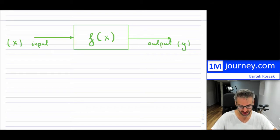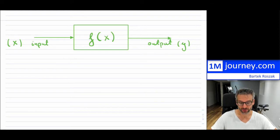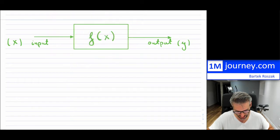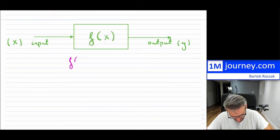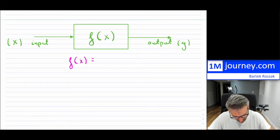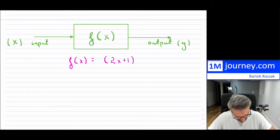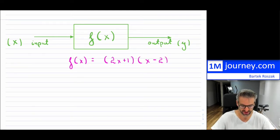Our function f(x) is going to be a quadratic. If I look at a quadratic in factored form, that means we have some zeros we can obtain — some factors. So let's say I have (2x + 1) and (x − 2). These are my two factors. This is a quadratic, and it is in factored form.